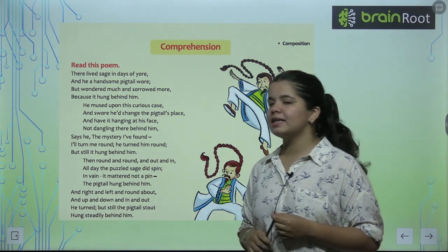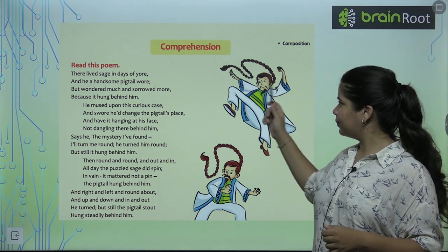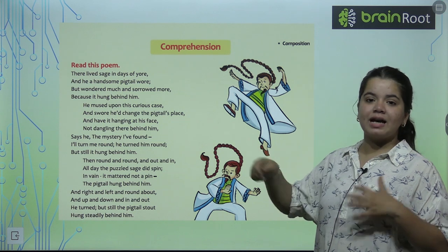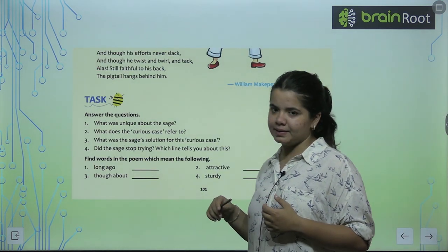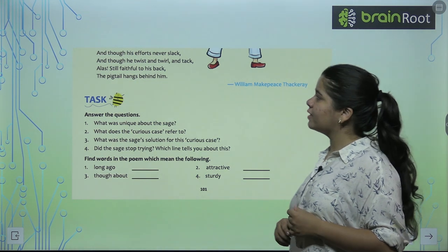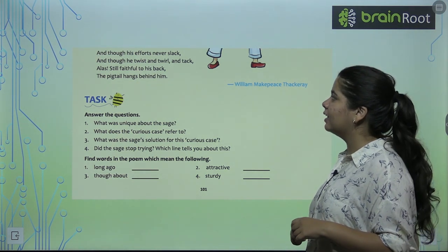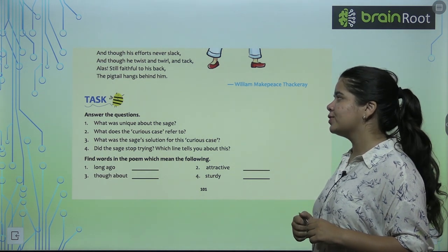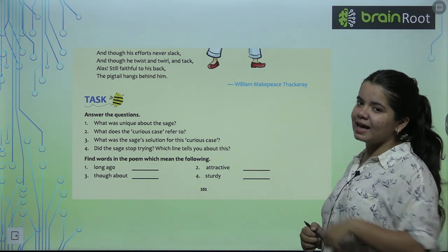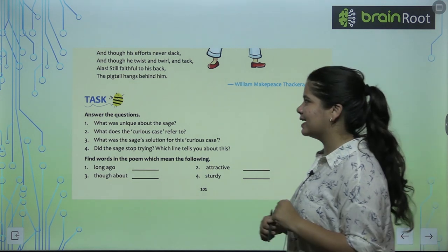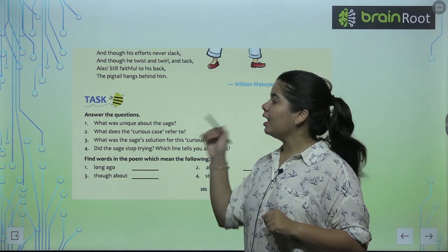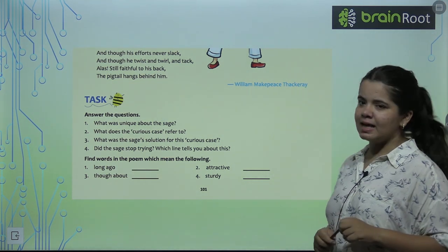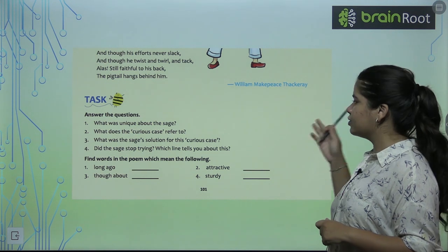And right and left and round about, and up and down and in and out, he turned, but still the pigtail stout hung steadily behind him. So you can see here, this is talking about a man who has a handsome pigtail, and he tries to move his tail, how he goes round and round and in and out. And though his efforts never slack, and though he twist and twirl and tack, alas, still faithful to his back. So you can tell me, alas, what is it? Perfect, this is an interjection. The pigtail hangs behind him. So this poem is written by William Makepeace Thackeray.